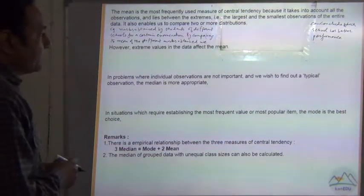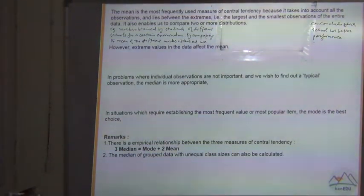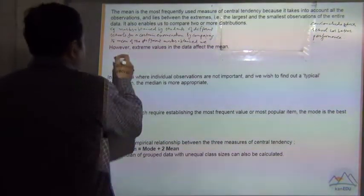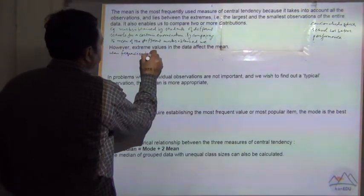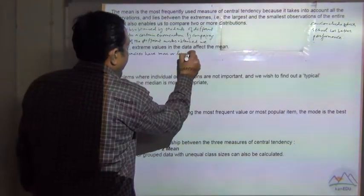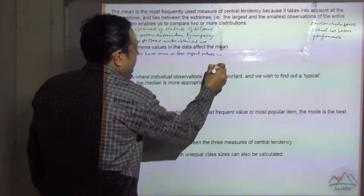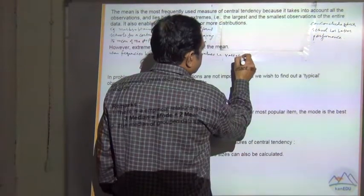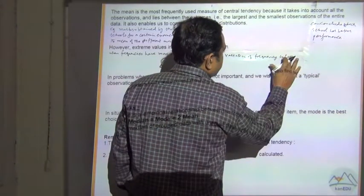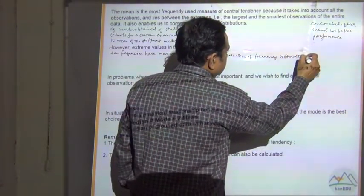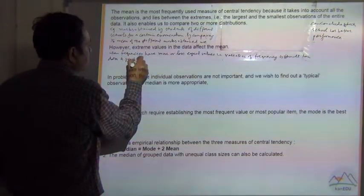For example, the mean of one of the classes when frequencies have more or less equal values, that is variation of frequency is small, then data is good.